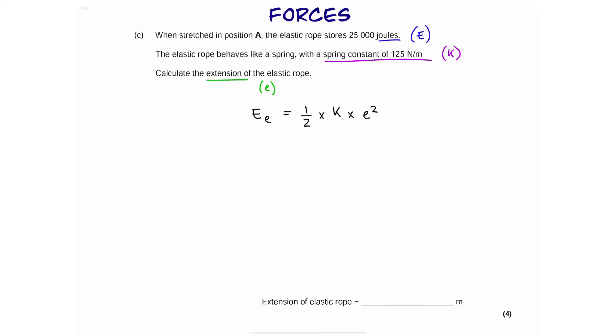Now that we have the equation, we're going to work out e. So, let's rearrange. First of all, we're going to times both sides by 2. That gives us 2 times energy equals K e squared. Then, divide both sides by K, which gives us the following. And finally, square root both sides. So, we have e on its own.